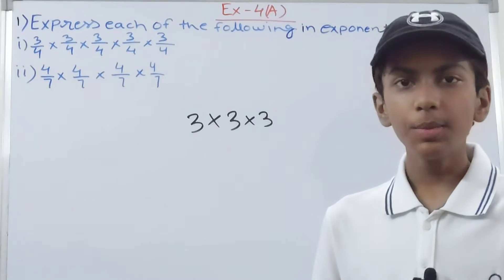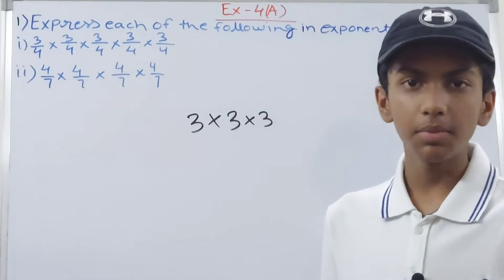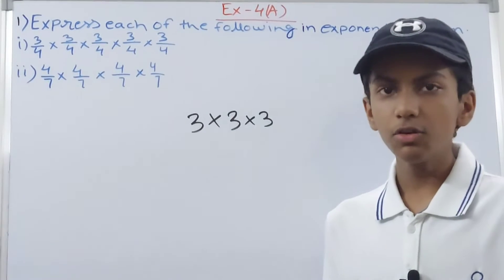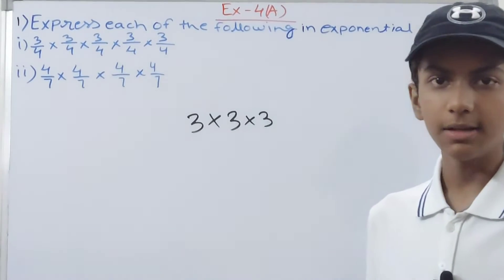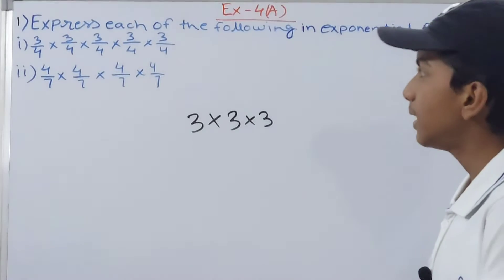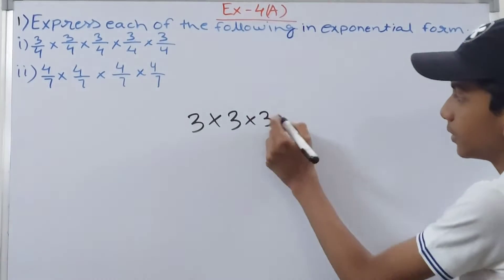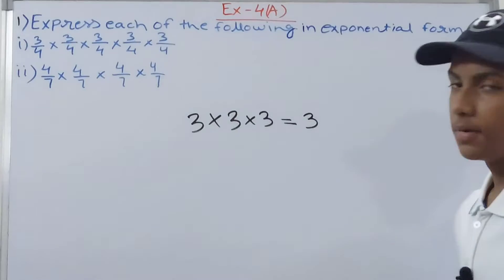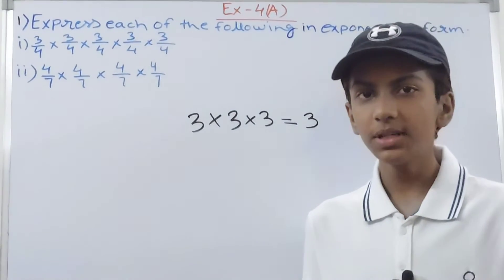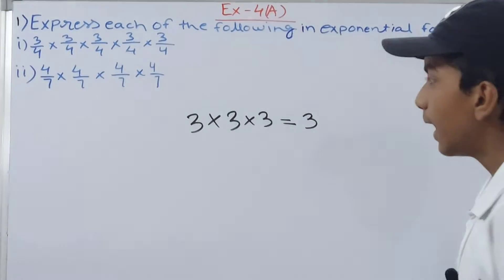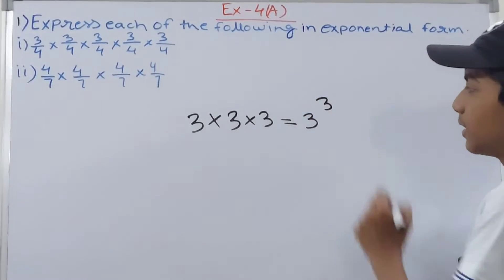Exponents are the numbers which indicate how many times a number is being multiplied by itself. Whenever you multiply any number by itself, you can write that in exponential form. This will have 3 as our base - the base is the number that is being multiplied.